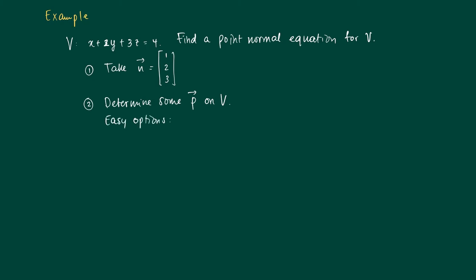putting y and z equal to 0, which leaves as x coordinate 4, so we get P is 4, 0, 0. If x and z are 0, then y is 2, so we get the vector P is 0, 2, 0. Or finally, x and y are 0, which would leave us with z is 4 over 3, so we get the vector 0, 0, 4 over 3.